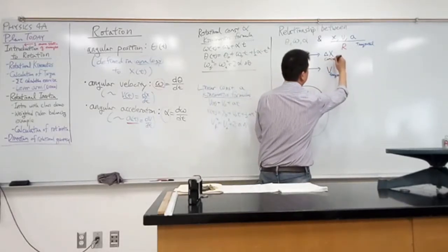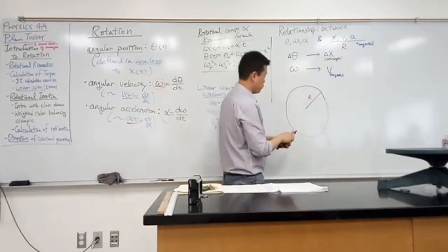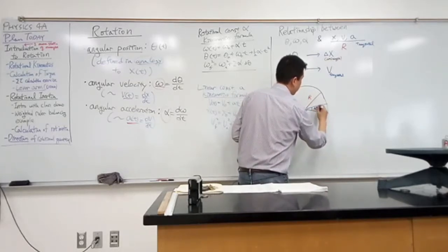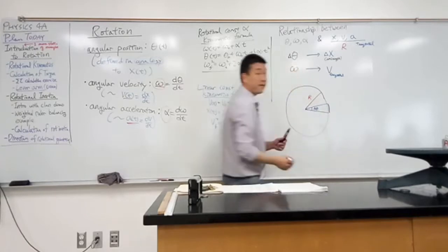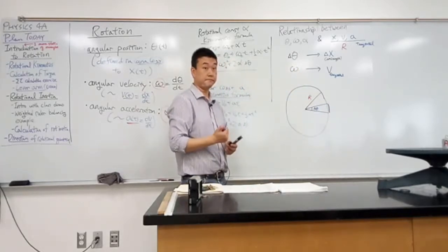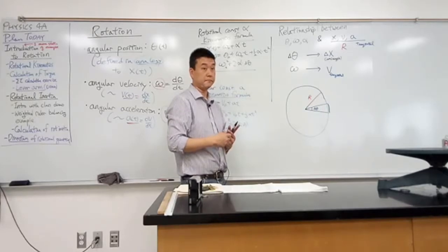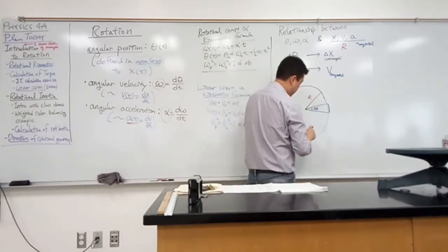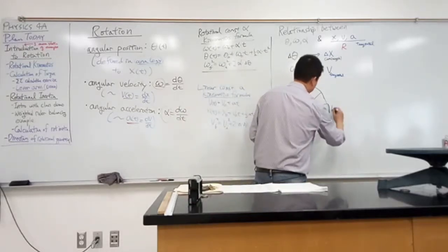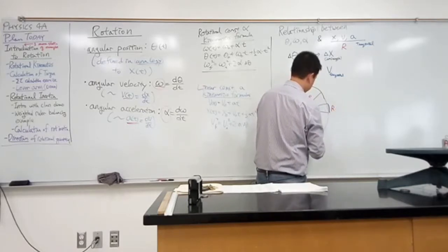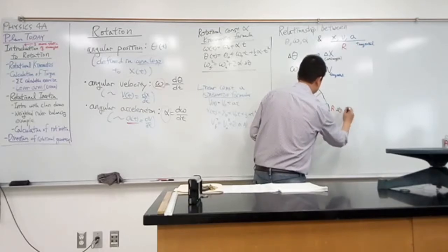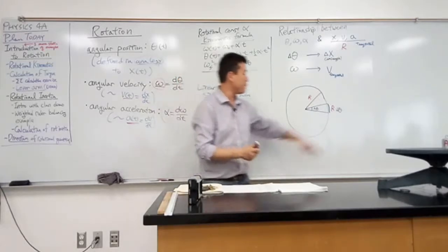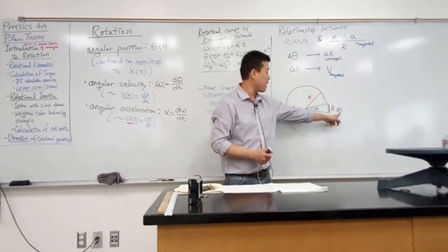So this delta x is arc length. It comes down to the question: you know the radius r, and for this particular arc you know the angle delta theta. How do you express this arc length? Yeah, this arc length is equal to r times theta. How do you remember this formula? Why is the arc length r times delta theta? Because the circumference is 2 pi r.